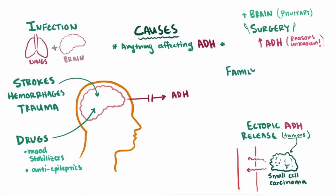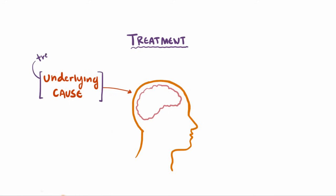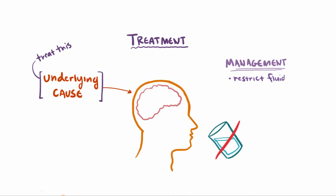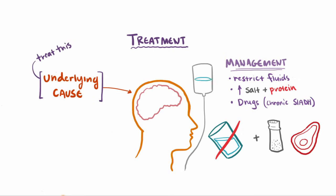If some of your family members have had SIADH before, there's a possibility you may develop it as well. The best treatment for SIADH is to identify and treat the underlying cause of the excessive ADH. Otherwise, we can manage SIADH by restricting daily fluid intake. A high-salt and high-protein diet can help replace the excess loss of sodium. Drugs that inhibit ADH secretion can also be used in chronic SIADH situations. For people with really severe acute hyponatremia symptoms, hypertonic IV fluids are usually administered.